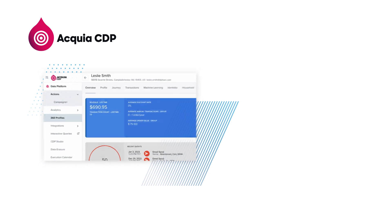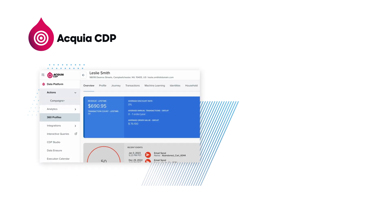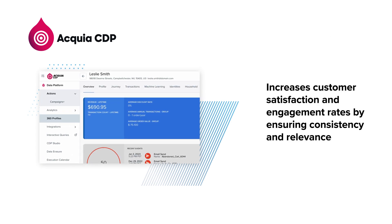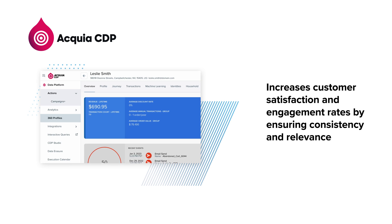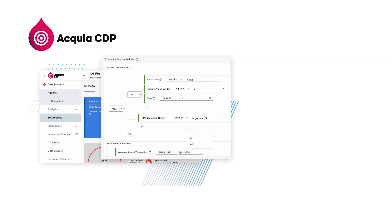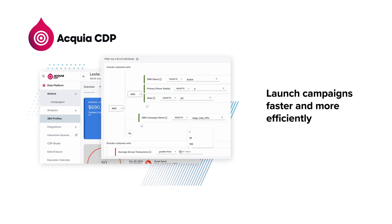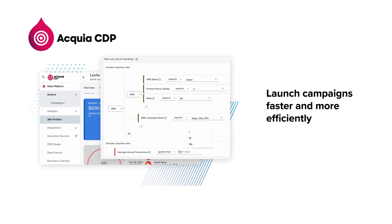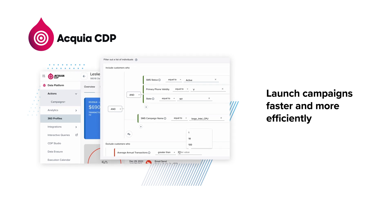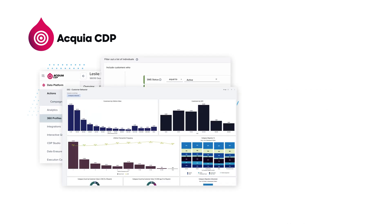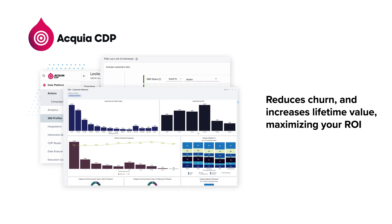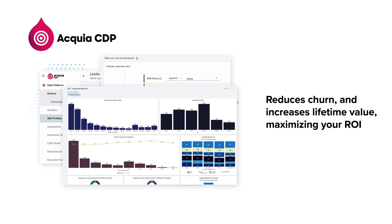Acquia CDP helps organizations increase their customer satisfaction and engagement rates by ensuring consistency and relevance in productive customer journeys. It enables you to launch campaigns faster and more efficiently, staying ahead of market trends and competitor moves. This reduces churn and increases lifetime value, maximizing your return on investment.